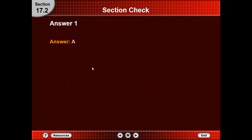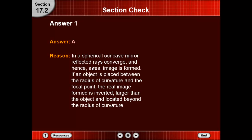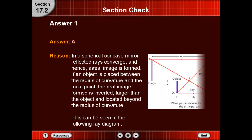The answer is A. In a spherical concave mirror, reflected rays converge and a real image is formed. If an object is placed between the radius of curvature and the focal point, a real image formed is inverted, larger than the object, and located beyond the radius of curvature. This can be seen in the following ray diagram.